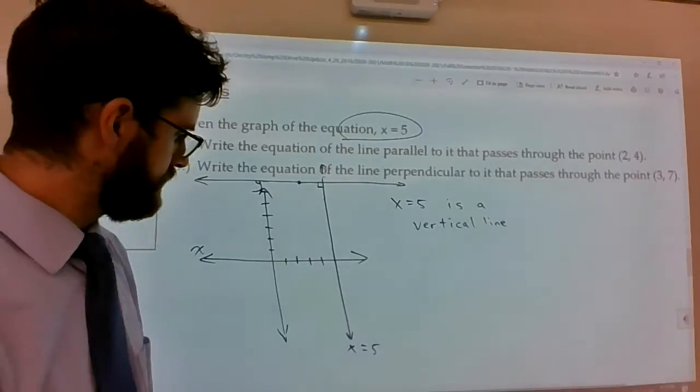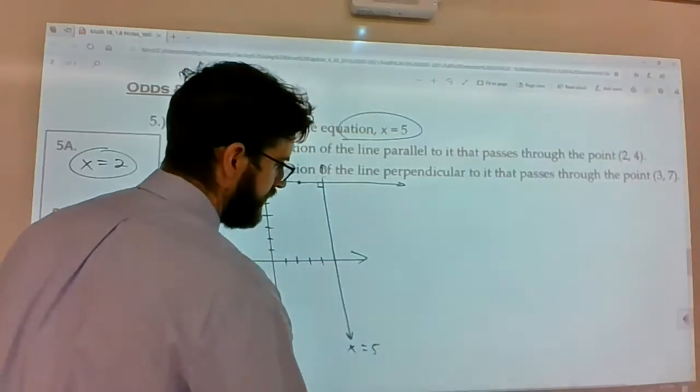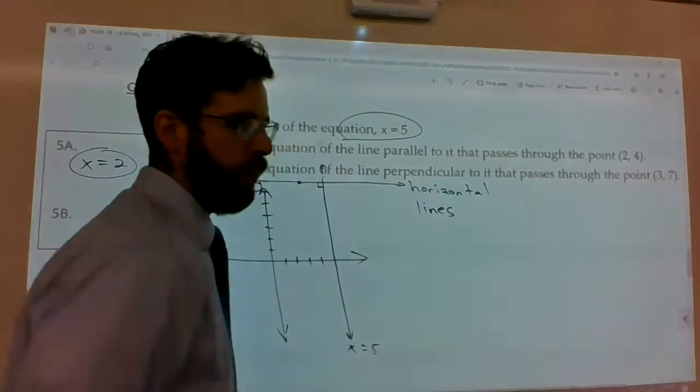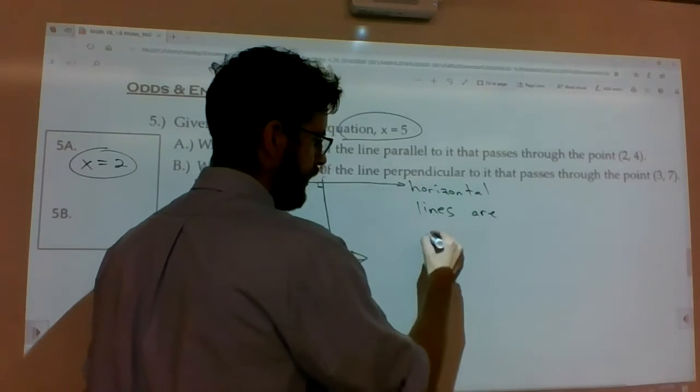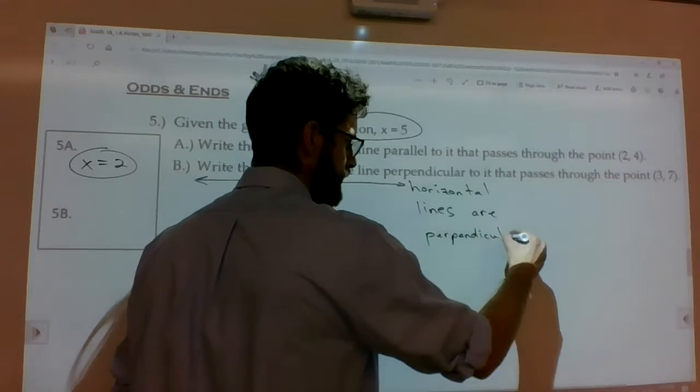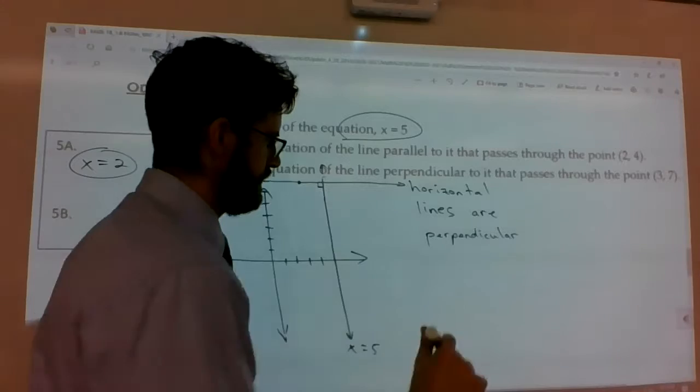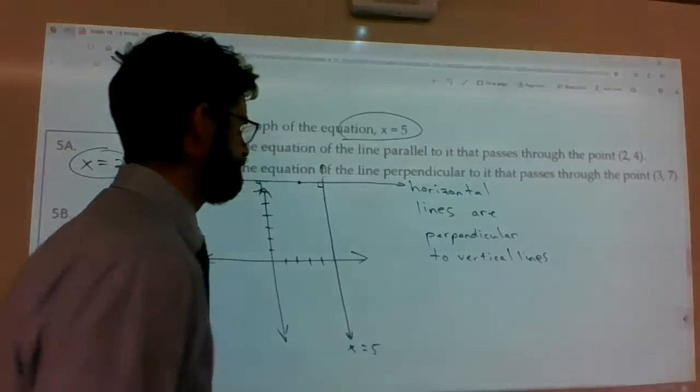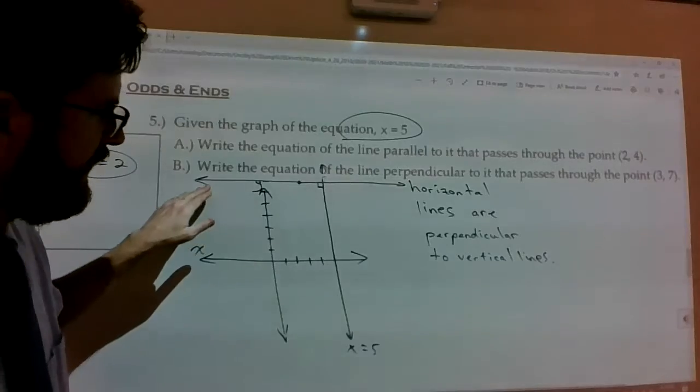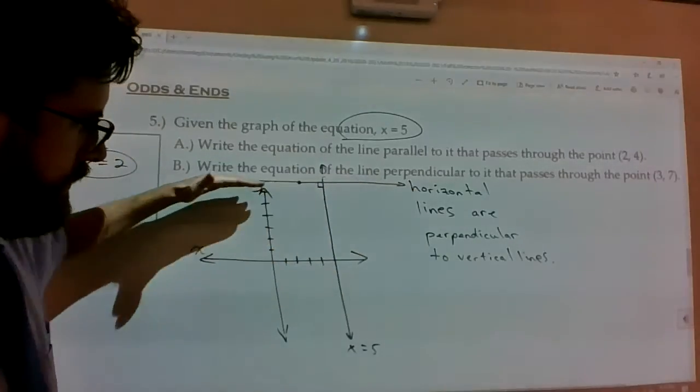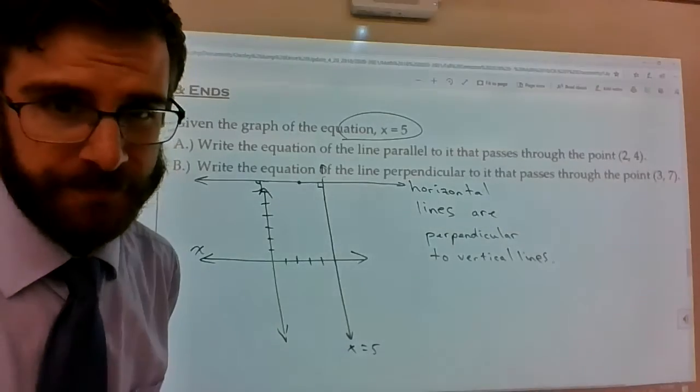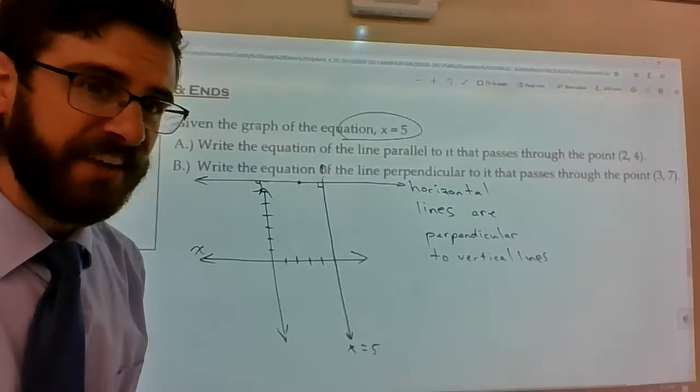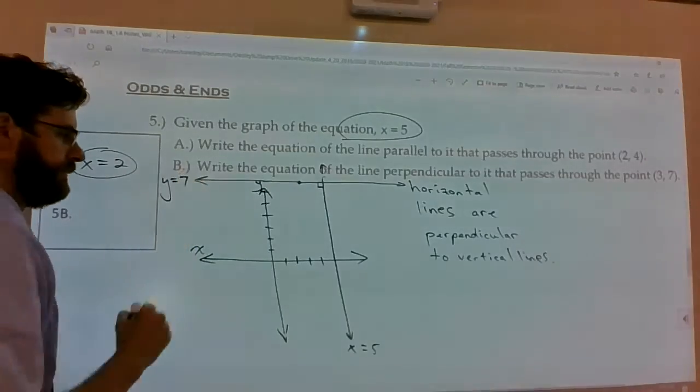Well, it's got to be this line. Horizontal lines are perpendicular to vertical lines. Every single one of them. So what would be the equation for this horizontal line that passes through 3, 7? It's not going to be x equals 3 because x equals 3 would be vertical. So our only other option really is y equals 7. And that's it.